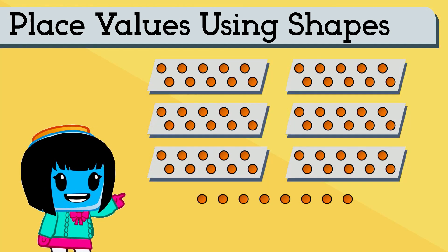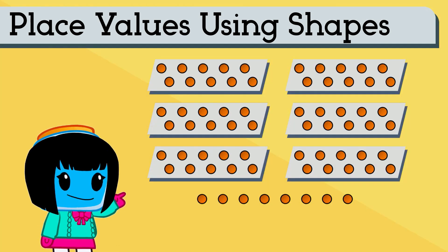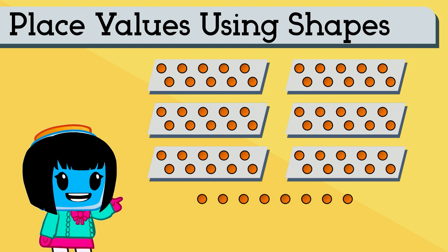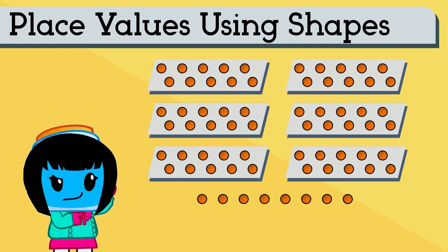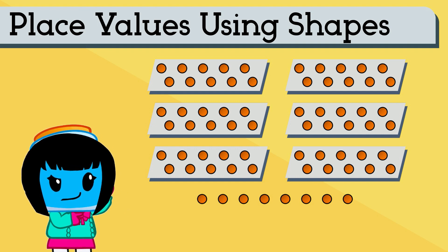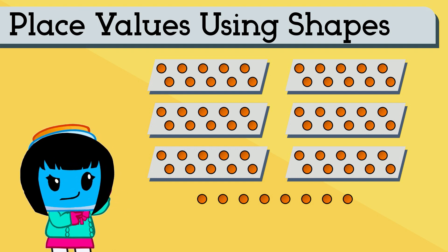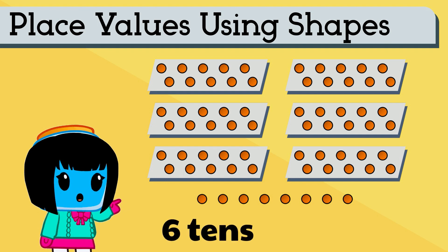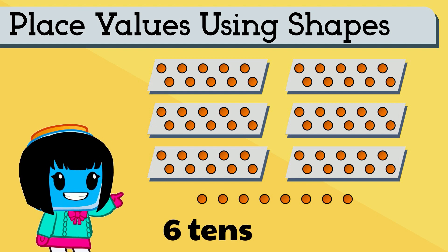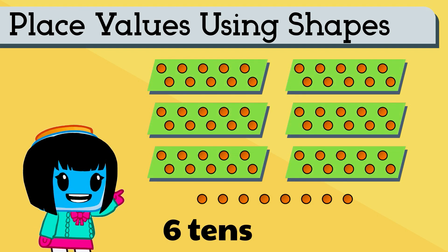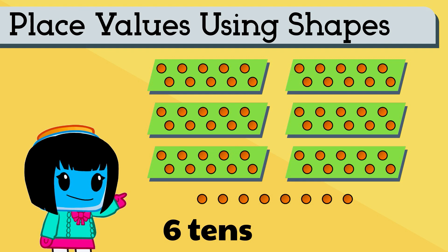Next, let's count the number of tens and ones from the dots below. Can you guess how many tens we have here? That's right — we have six tens because there are six boxes that have ten dots each.